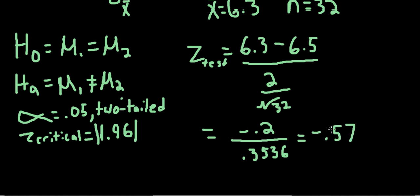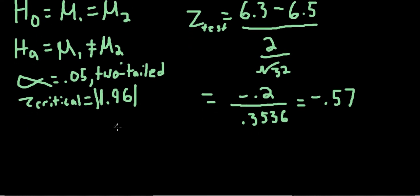Now, to reject, we would have needed to get to at least negative 1.96, or if we were completely wrong, positive 1.96.